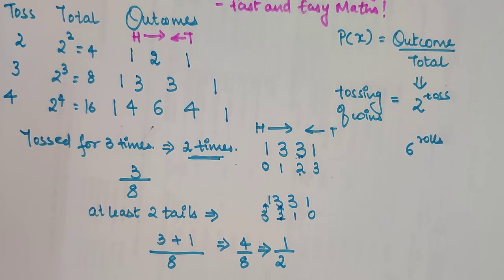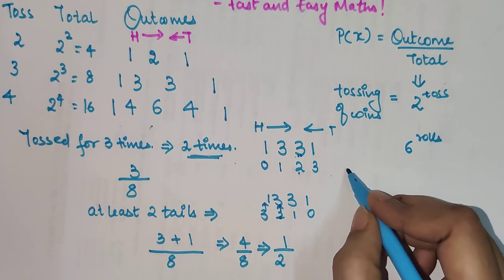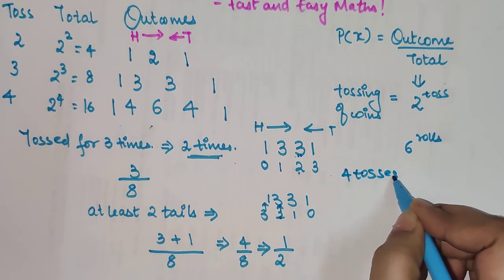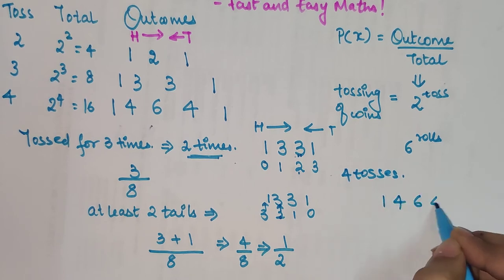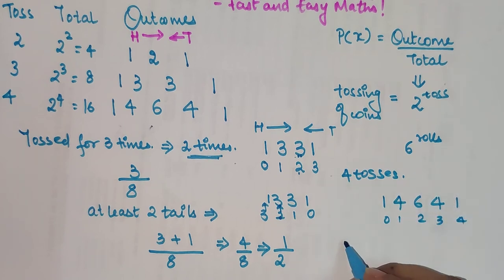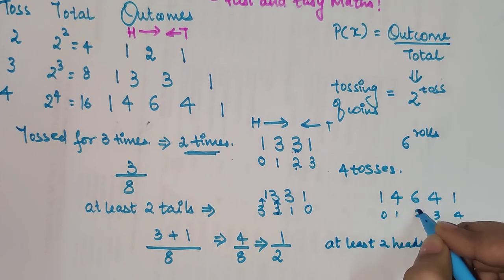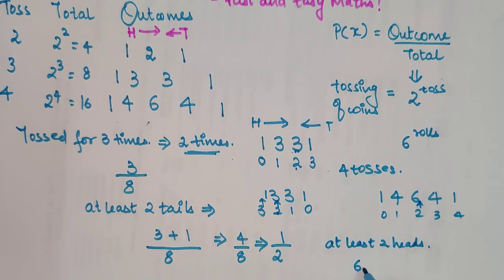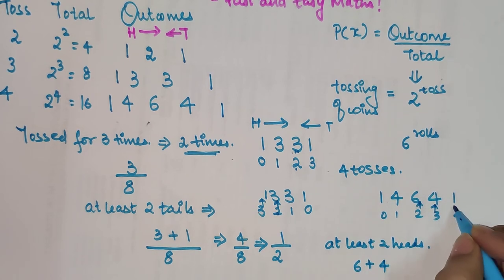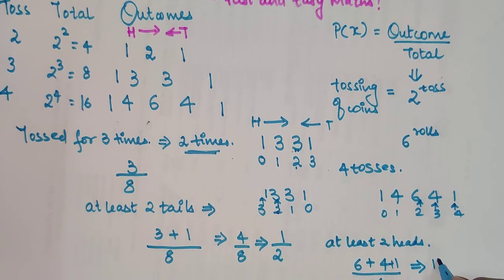If you are liking the way I am explaining, please hit the like button — it gives me tremendous encouragement to make these videos. Now for four tosses, the outcomes are 1, 4, 6, 4, 1, and the total is 16. If the question is having at least two heads, the outcome for two is 6, for three is 4, and for four is 1. So 6 plus 4 plus 1 equals 11, and the answer is 11 upon 16.